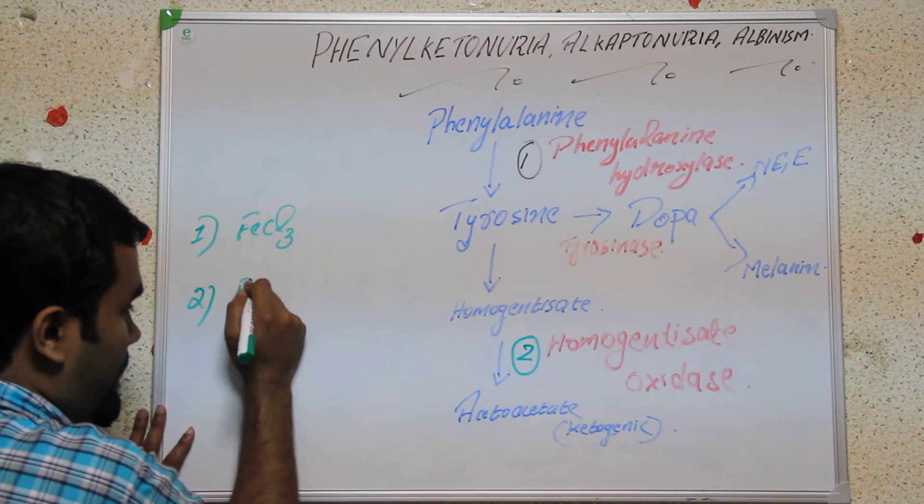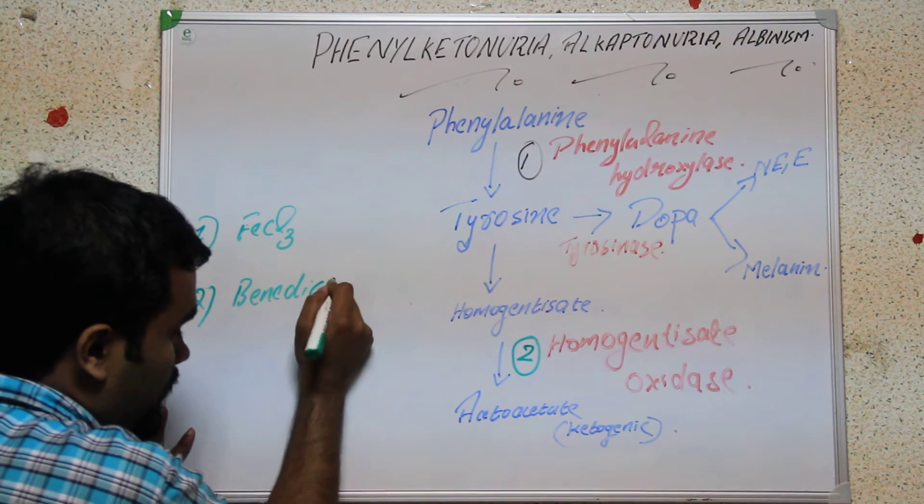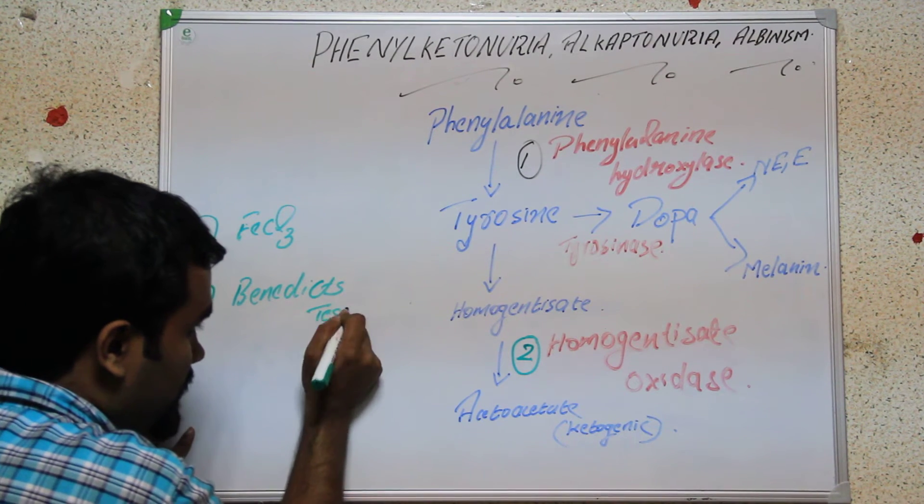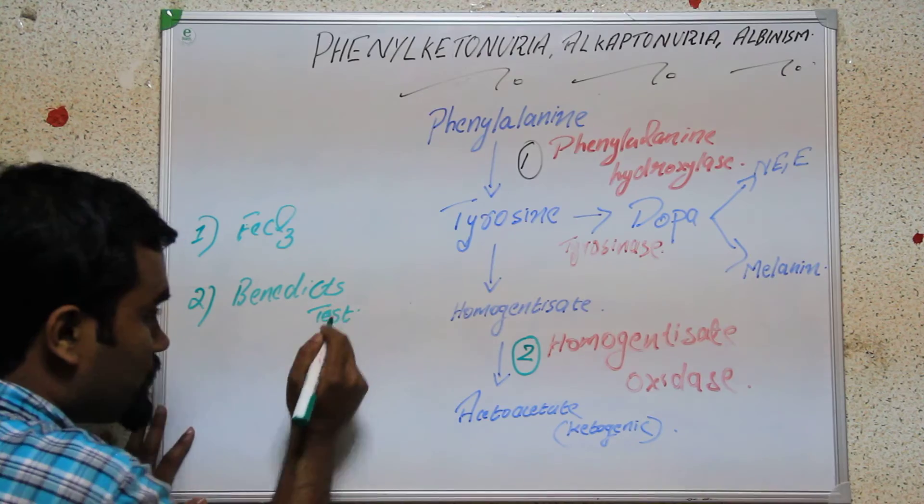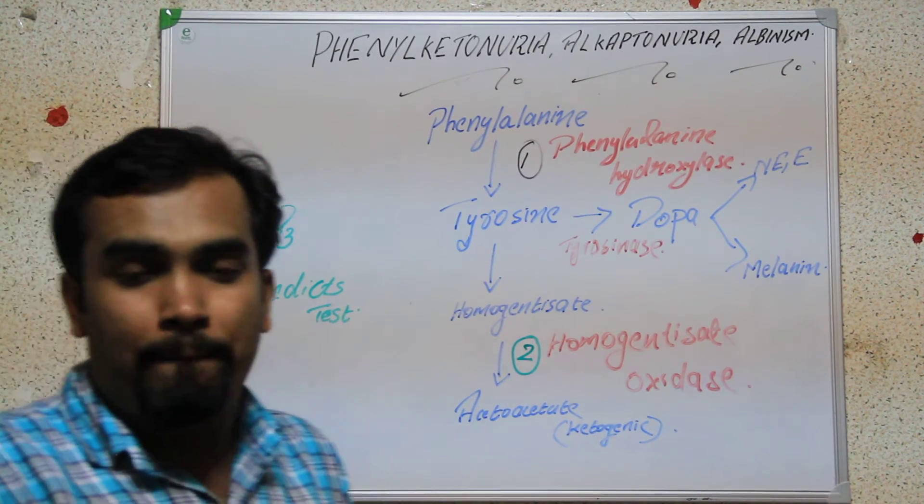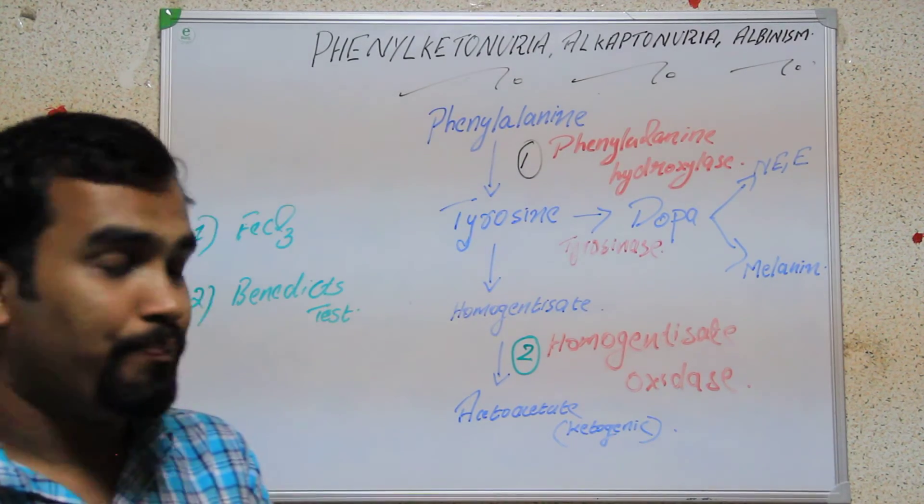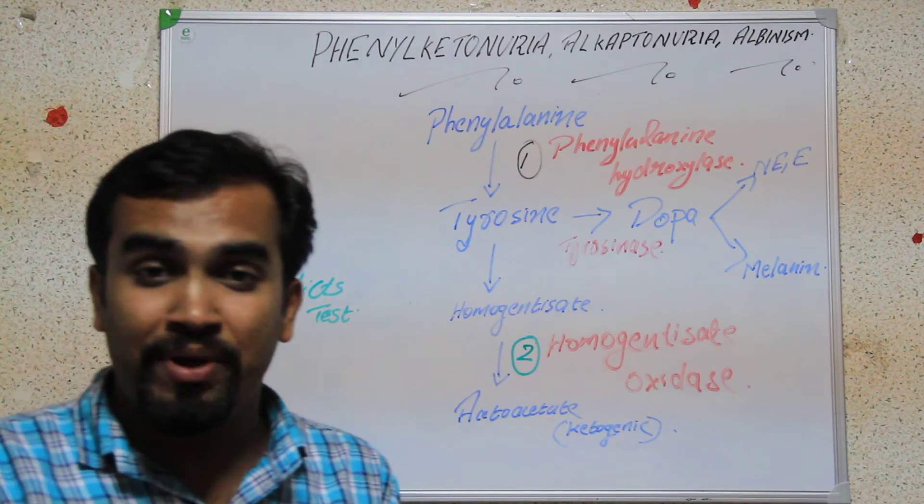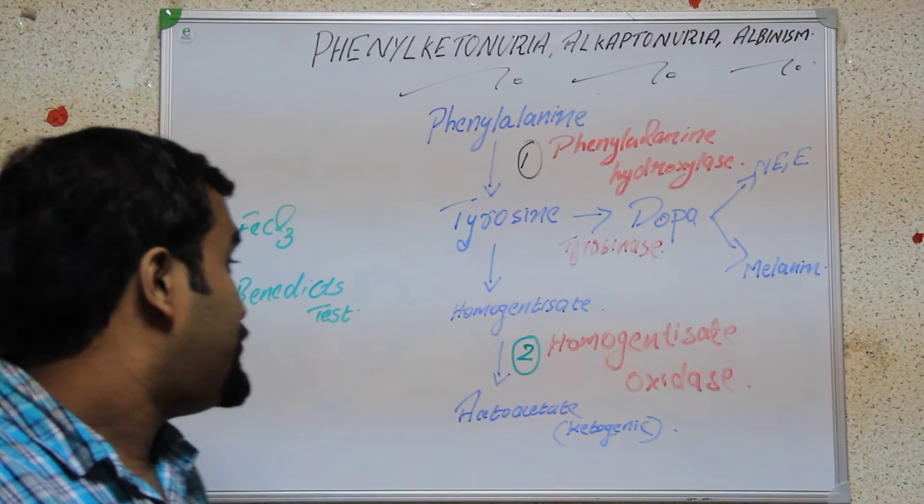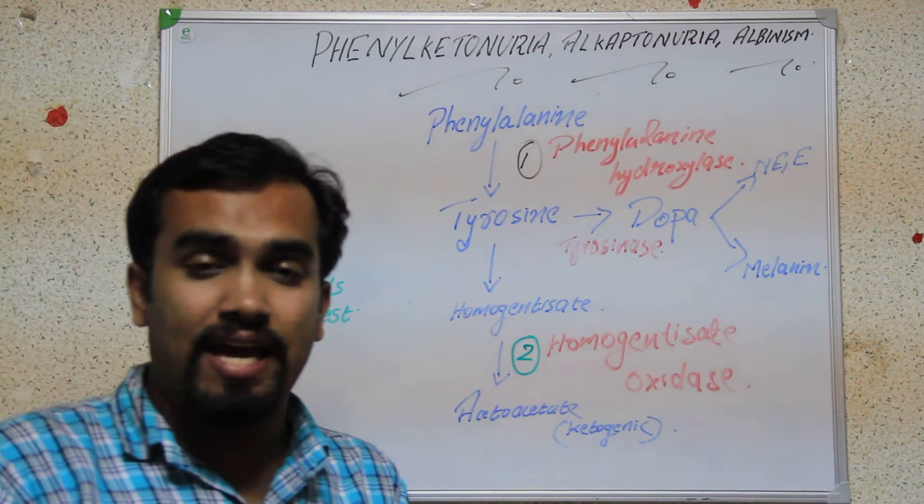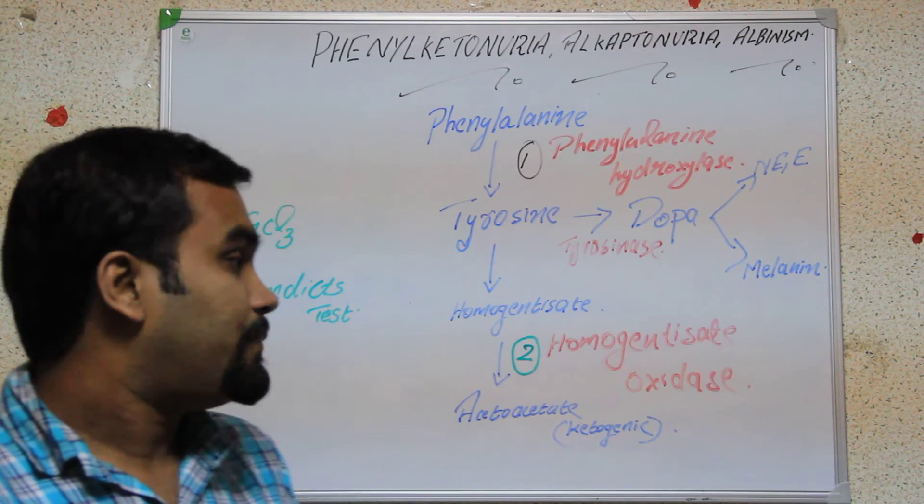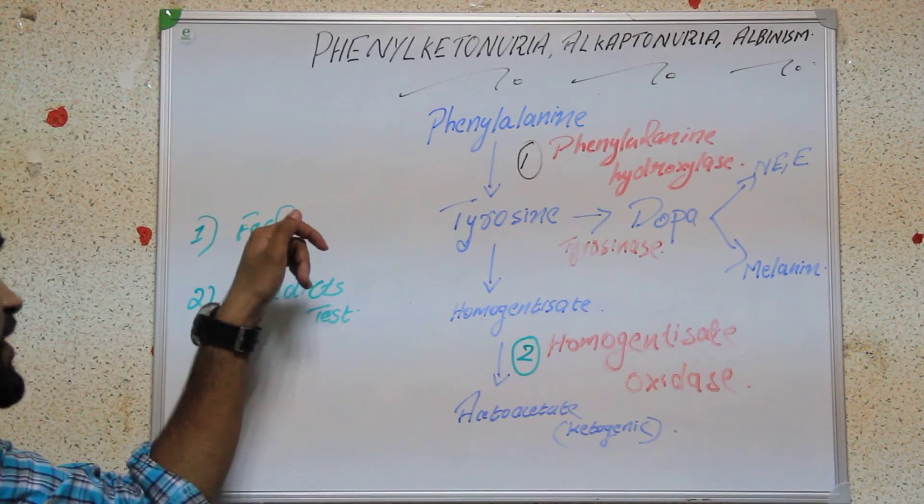What is Benedict's test? In Benedict's test, we will add a reagent known as Benedict's reagent. If the test is positive, we will get a brick red precipitate. To confirm alkaptonuria, we can use both tests: ferric chloride and Benedict's test.